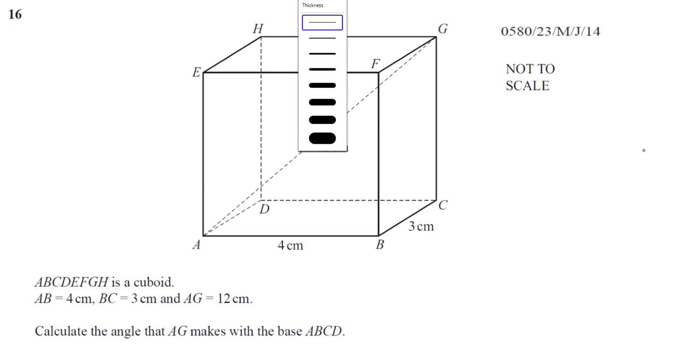It tells us that ABCDEFGH is a cuboid. It tells us the length of AB is 4, the length of BC is 3, the length of AG is 12. So AG is like going from one corner all the way to the opposite corner of the other side in the top.